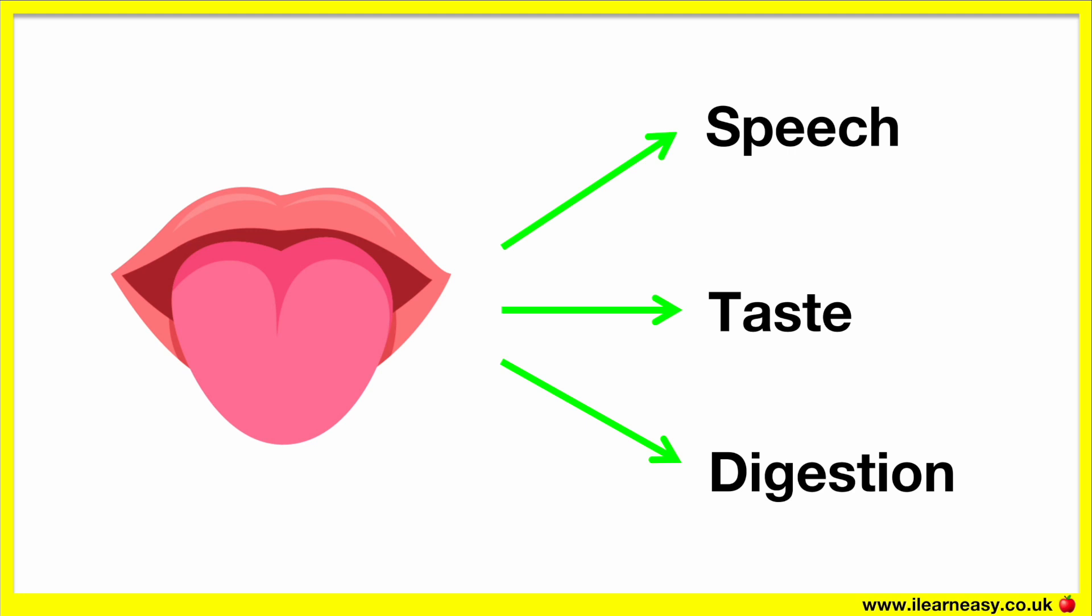So when we put something in our mouth, our tongue helps us to move the food around our mouth when chewing it. Once the chewed food is mixed with the saliva, the tongue moves the food to the back of the throat and down to the stomach.